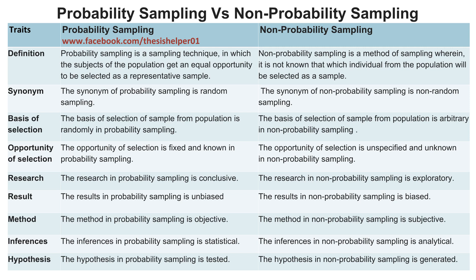The synonym of probability sampling is random sampling, whereas the synonym of non-probability sampling is non-random sampling.